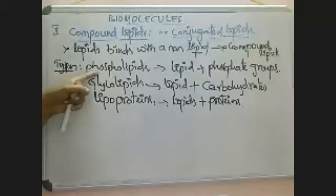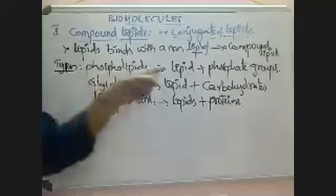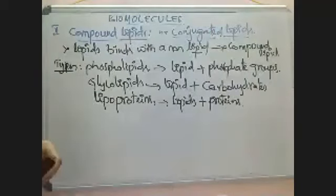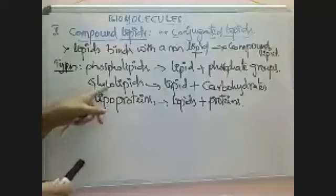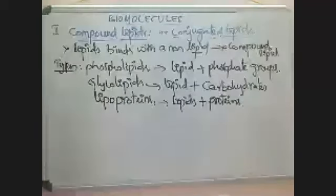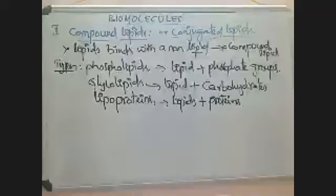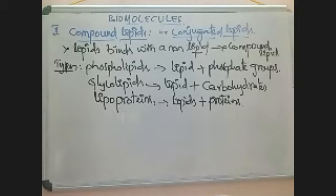To summarize: phospholipids are those in which lipid combines with a phosphate group; glycolipids are those in which lipids combine with carbohydrate; and if lipids combine with protein, that form is called lipoprotein.